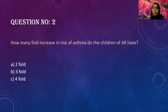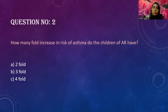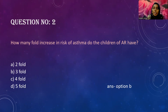Question two: how many fold increase in risk of asthma do children with allergic rhinitis have? We are often asked this by parents in the OPD — they ask if their child with allergic rhinitis is at risk for asthma. The answer is Option B — a threefold increase in the risk of asthma in any child with allergic rhinitis. We will discuss asthma in detail in a later session.